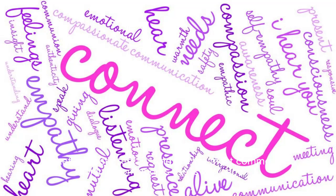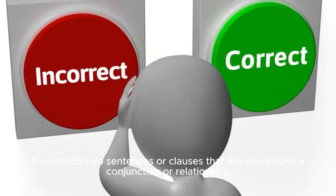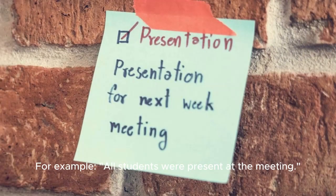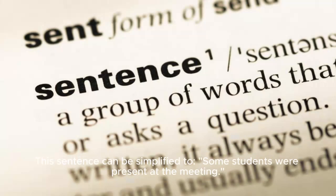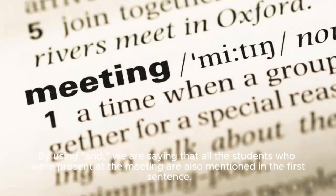One: 'and' is the most common conjunction, and its use is very simple. It connects two sentences or clauses that are expressing a conjunction or relationship. For example, all students were present at the meeting. By using 'and', we are saying that all the students who were present at the meeting are also mentioned in the first sentence.